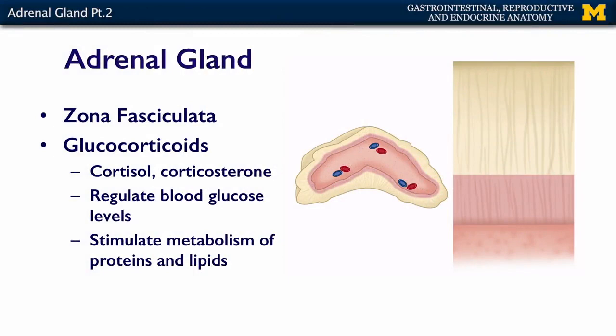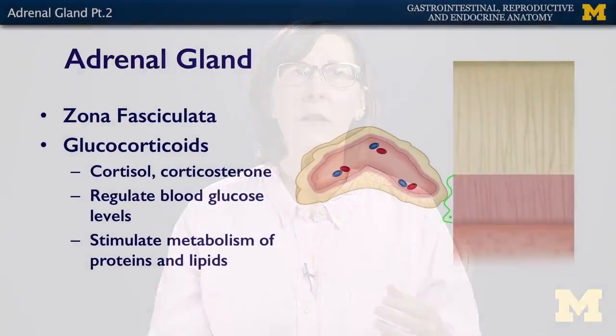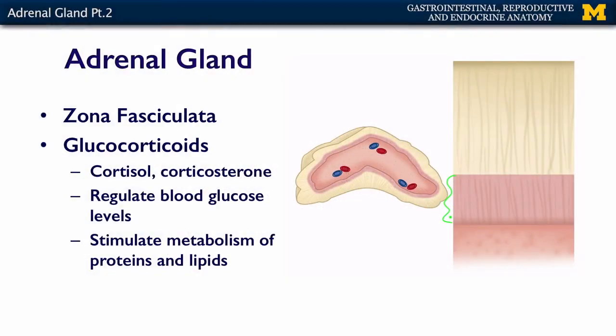The next layer in is the zona fasciculata, and the zona fasciculata makes glucocorticoids. Glucocorticoids are responsible, just like they sound, for managing sugar or glucose. The two hormones secreted by this layer include cortisol and corticosterone. These will elevate your levels of blood glucose, and they will stimulate other parts of your body to metabolize proteins and lipids and turn them into sugars.